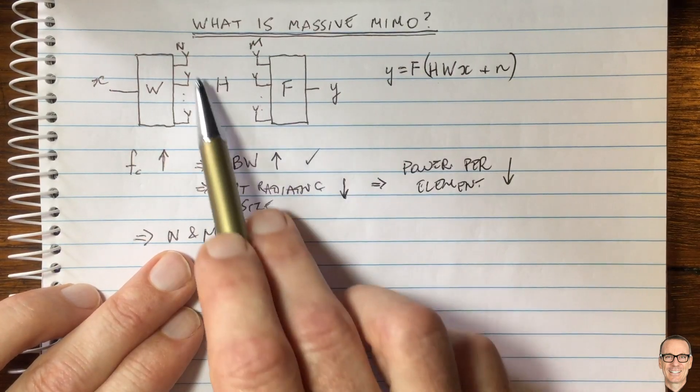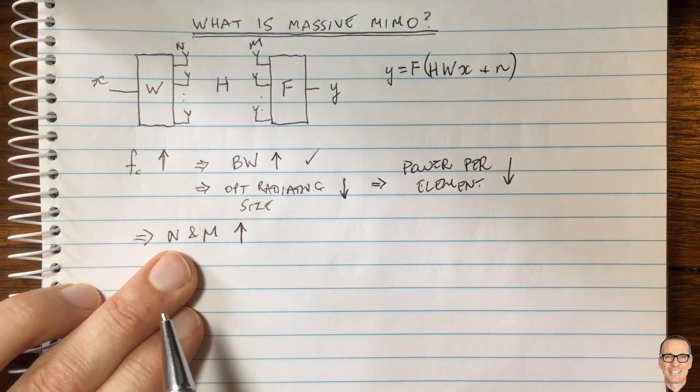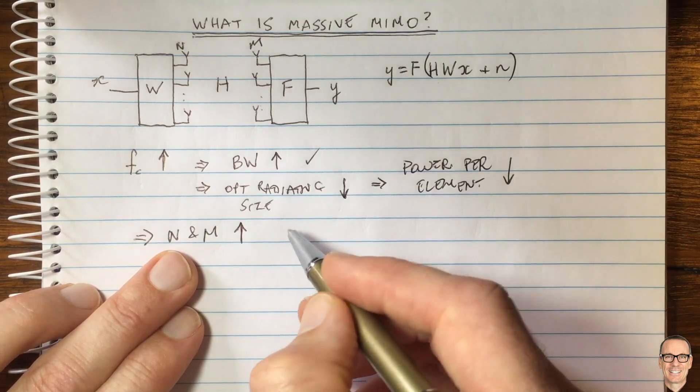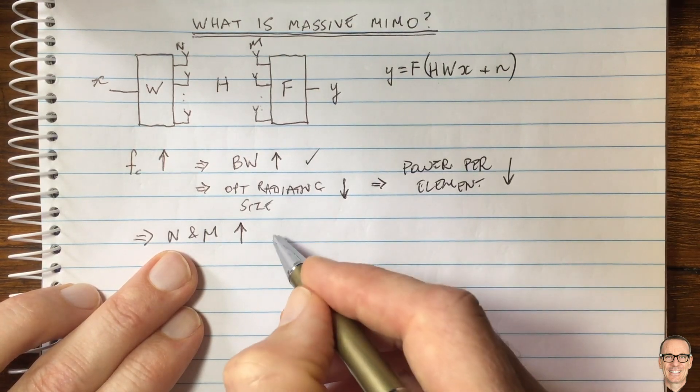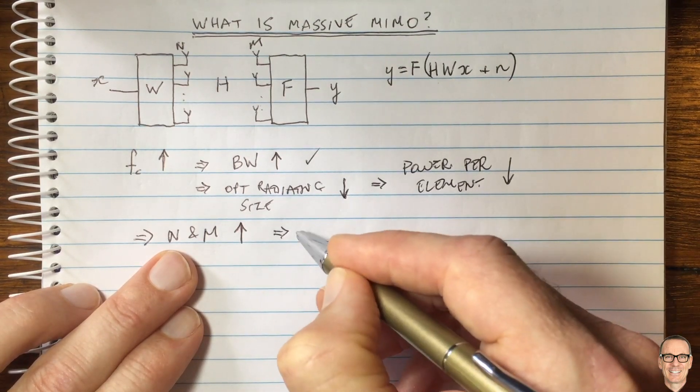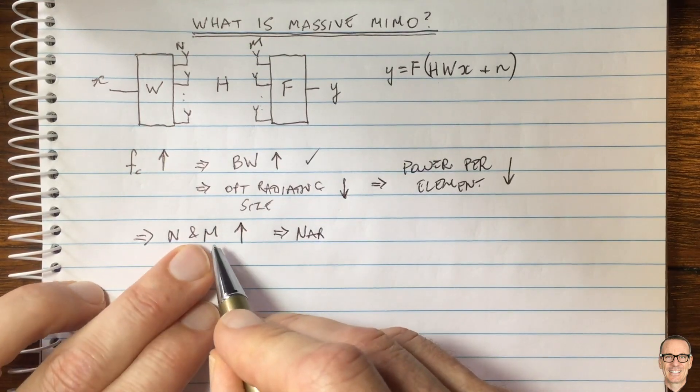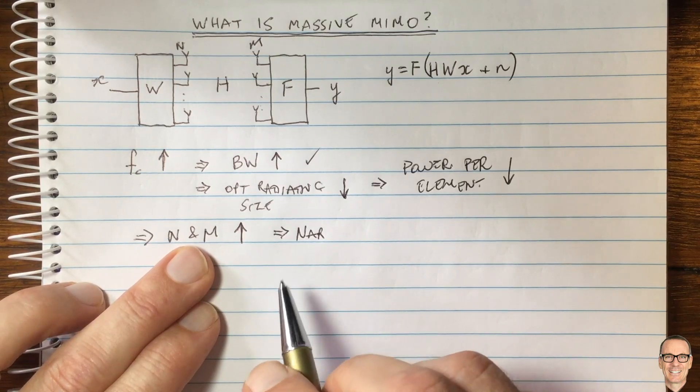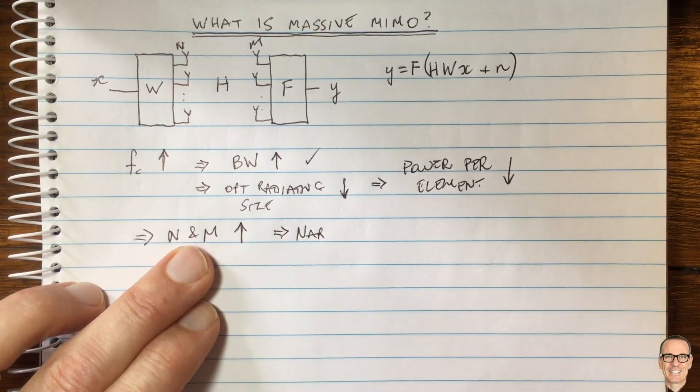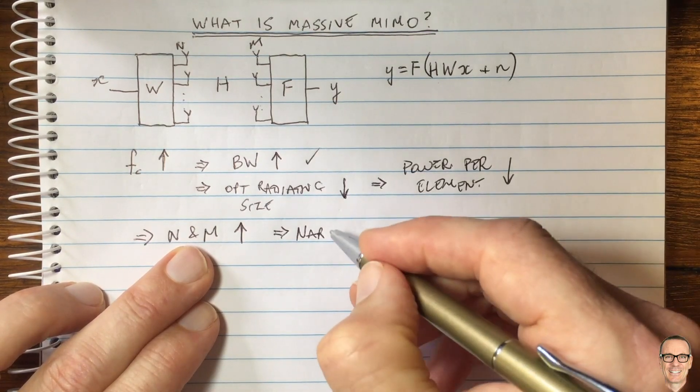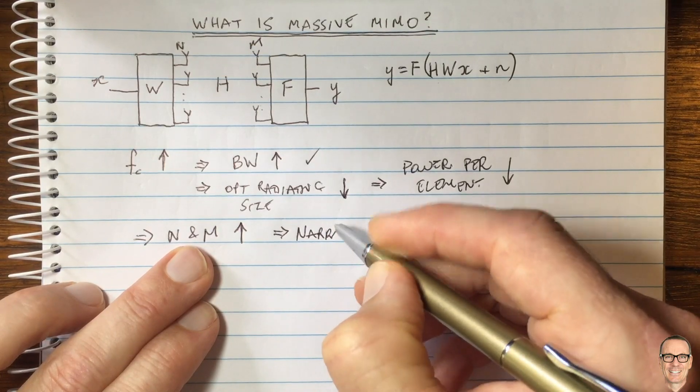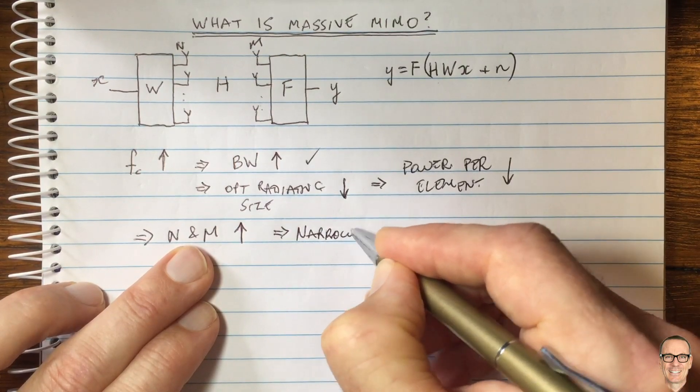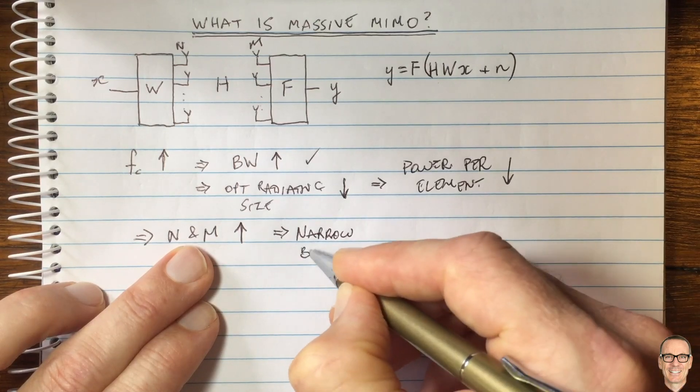Fundamentally, it's still just MIMO, it's just that there are a lot of antenna elements, and that has some implications. One of the things this implies is narrow beams. As more elements come up, and there's a link below to investigate the relationship between the number of antenna elements and beam widths, the narrow beams are a consequence.